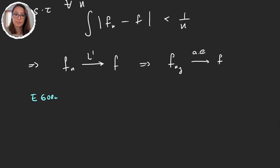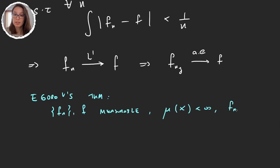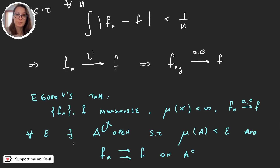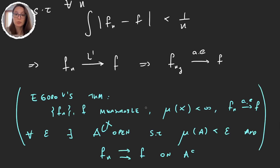Let's recall Egorov's theorem. We have a sequence f_n and f measurable, the measure of our space is finite, and the sequence converges to f almost everywhere. Then for any epsilon, there exists a set A (a subset of X) such that the measure of A is less than epsilon, and the sequence converges uniformly to f on the complement of A. So A is a very small set, but on the complement of A, we have uniform convergence. This is what we want to apply now — not for the sequence f_n, but for the subsequence f_{n_j}.